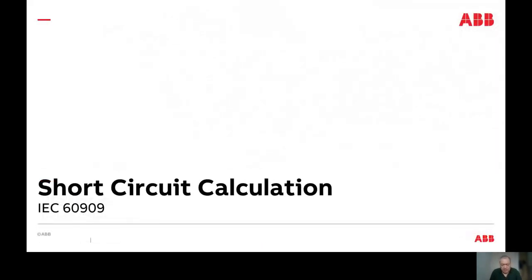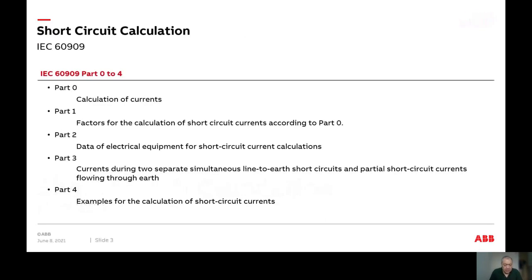The IEC standard for short circuit calculation is IEC 60909. In 60909 there are many parts: Part 0 covers the calculation of currents, Part 1 covers factors for the calculation of short circuit currents, Part 2 covers data of electrical equipment in the system, Part 3 covers currents during two separate simultaneous line-to-earth short circuits and partial short circuit currents flowing through earth, and Part 4 provides examples of short circuit current calculations.